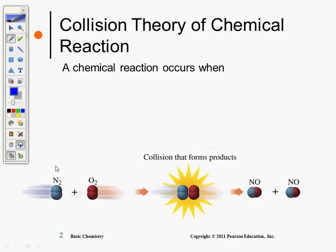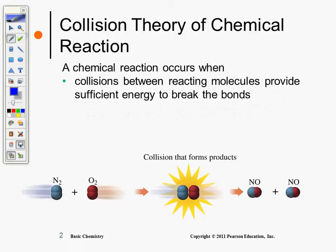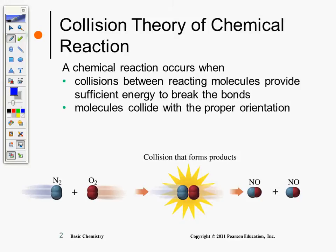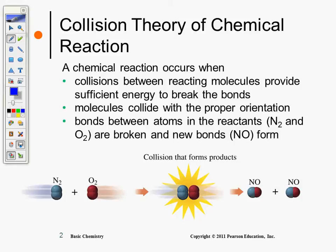So we have a chemical reaction. This occurs when: A — collisions between reacting molecules provide sufficient energy to break the bonds. B — molecules collide with proper orientation. And C — bonds between atoms in the reactants, N2 and O2, are broken, and new bonds like nitrogen monoxide form.